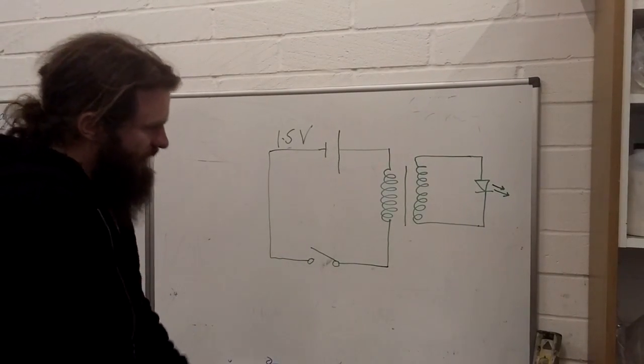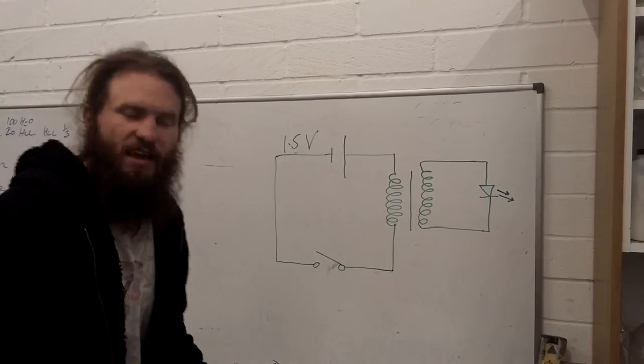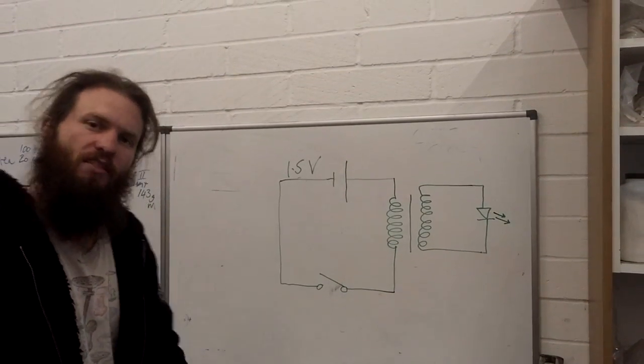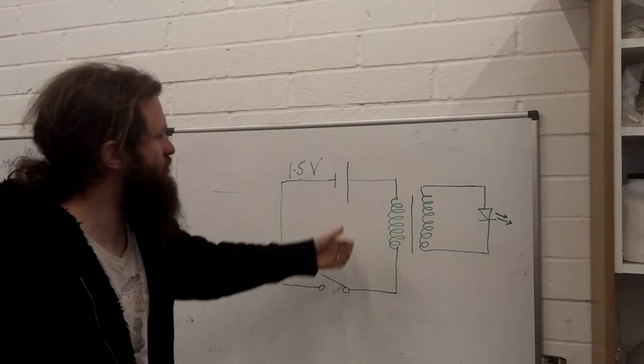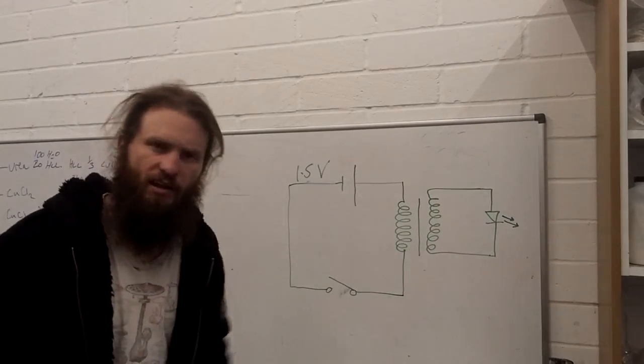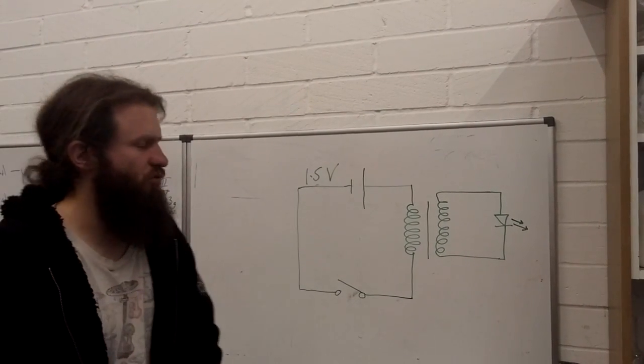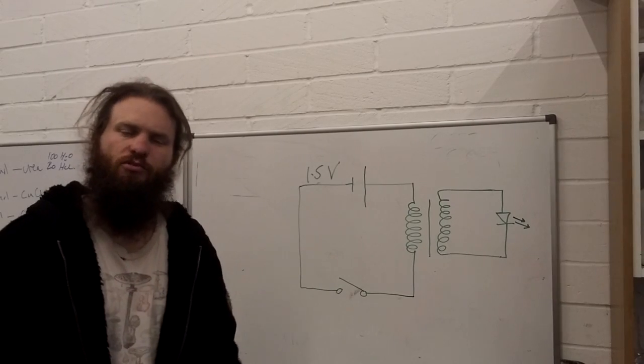When the EMF field collapses, the energy is then shared between both coils. In this way, we can transfer energy from this circuit on the left to this circuit on the right, which is directly connected to the LED. So without any physical connection, we can drive the LED through the transformer.